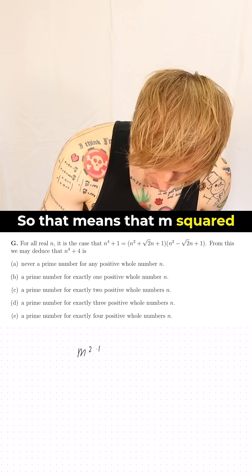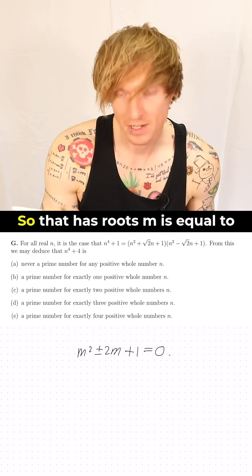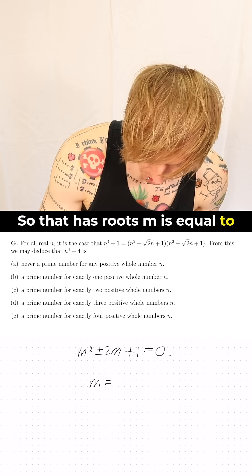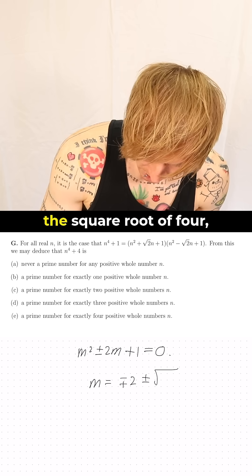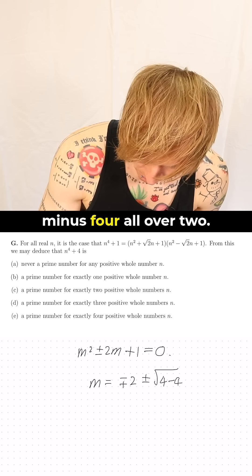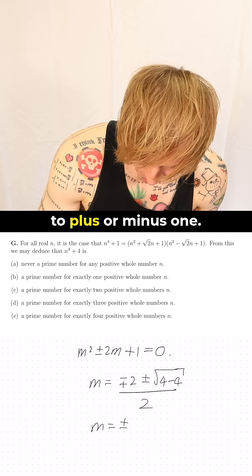So that means that m squared plus or minus 2m plus 1 must be 0, so that has roots m is equal to minus or plus 2 plus or minus the square root of 4 minus 4 all over 2, so that tells us that m is equal to plus or minus 1.